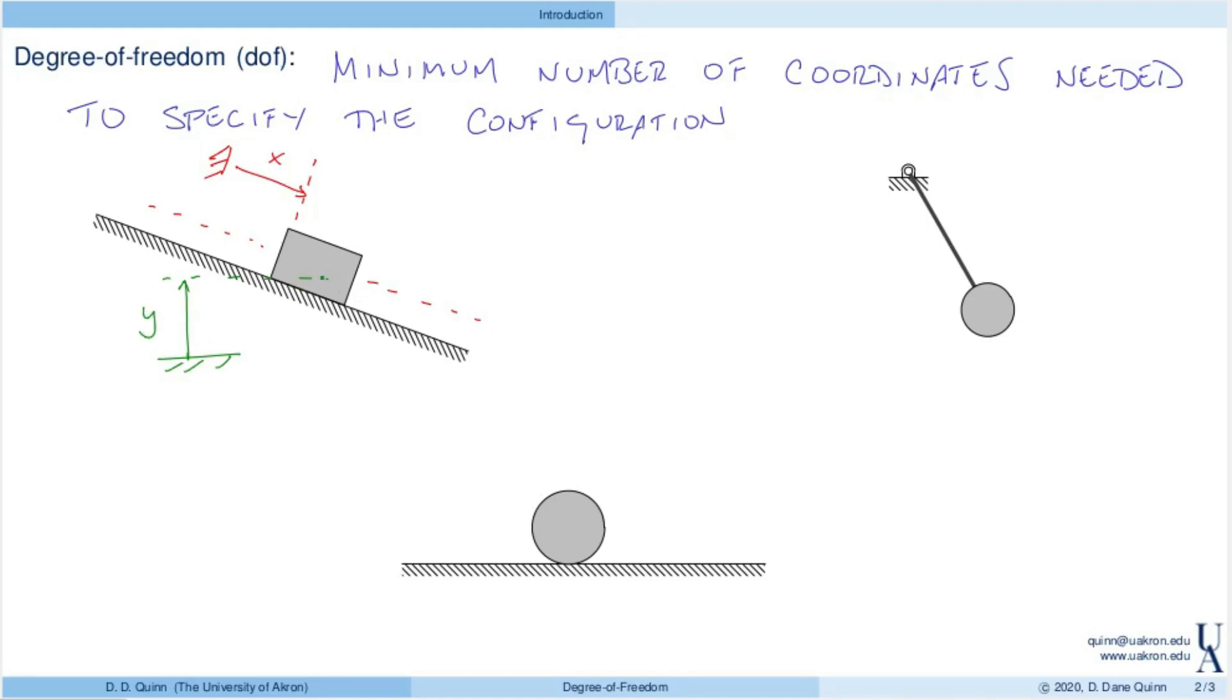If I tell you the height, you can absolutely find out where this block is. So these are two different coordinates that can both be used to describe the configuration. The important thing is that I only need one. These two coordinates are dependent on one another. So because I only have one that I require, this is a one degree of freedom system.